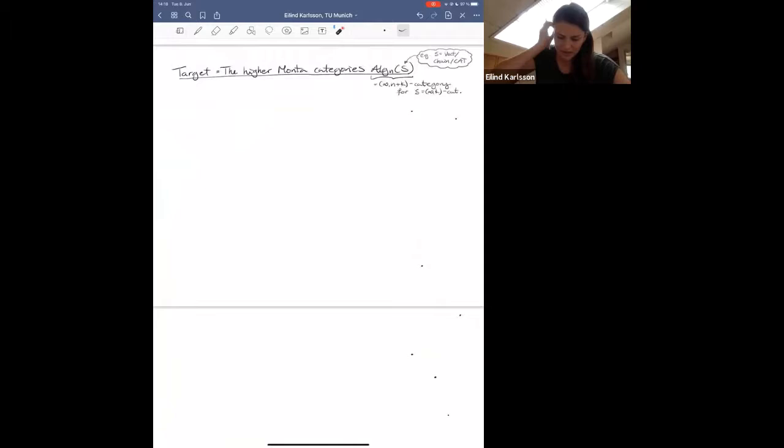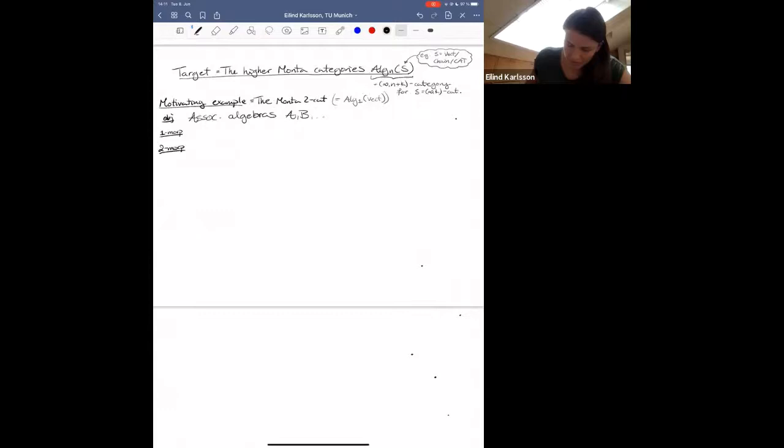So that's the motivation that turns us into the categorical side. And I want to at least briefly introduce my favorite target that I'm currently working with. It's the so-called higher Morita categories. So it's denoted Alge n of S. So S is our underlying category. You can choose to stick in category of vector spaces, chain complexes, or just a category of categories, just to give you some examples. But in total, this guy will be an infinity n plus k category when S is an infinity k category. So the motivating example or the reason for the name is the Morita 2 category, which corresponds to Alge 1 in vector spaces.